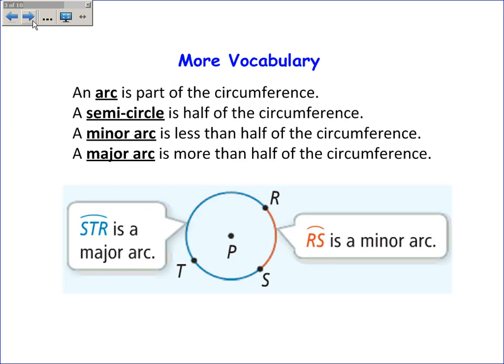Some more vocabulary. An arc is part of the circumference, so it's kind of like on the crust of the circle. A semicircle is half of the circumference. You probably know that already. Now, a minor arc is less than half of the circumference, and a major arc is more than half of the circumference.